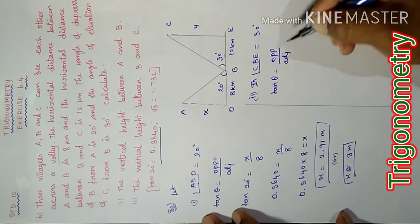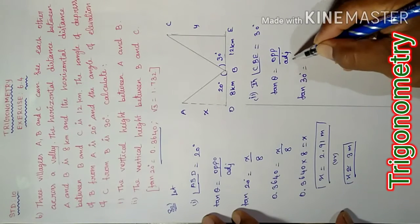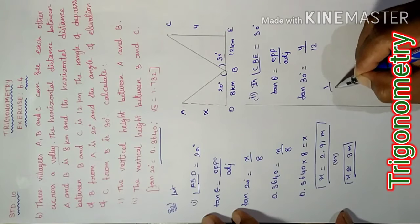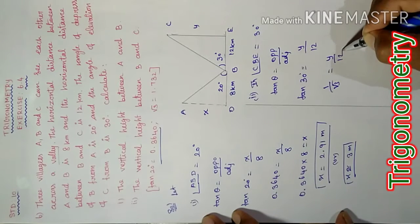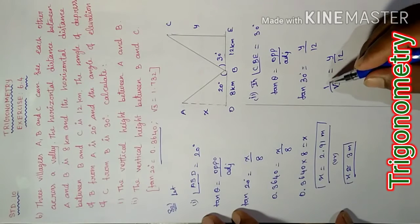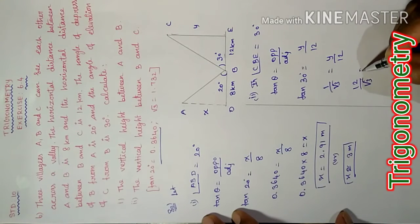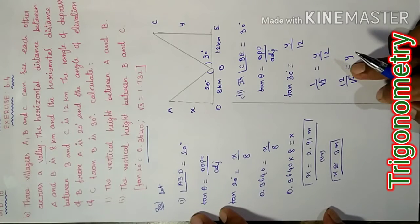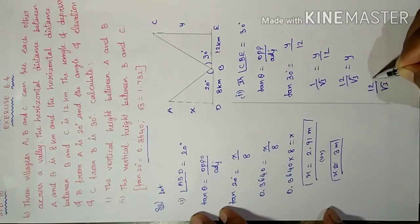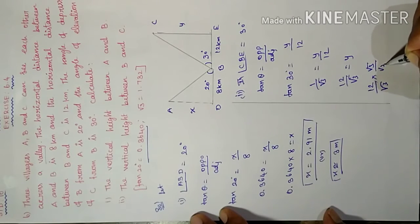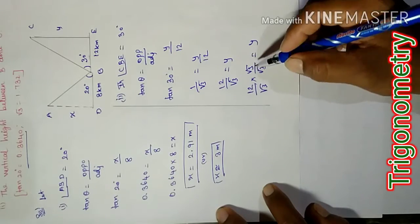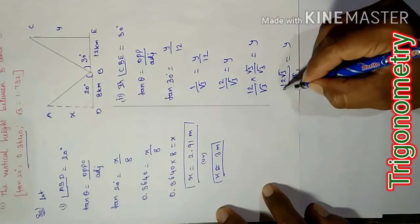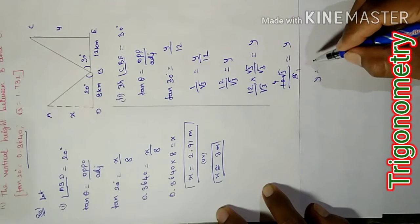Tan theta equal to opposite side by adjacent side. Tan 30 degrees, opposite y, adjacent 12. Tan 30 equal to 1 by root 3 equal to y by 12. Cross multiplication, 12 by root 3 equal to y. Rationalizing denominator root 3, y equal to 4 root 3.